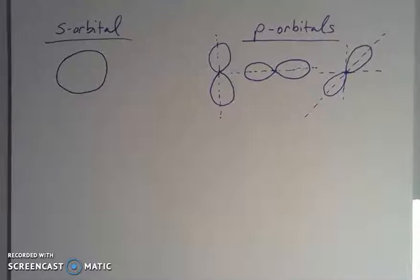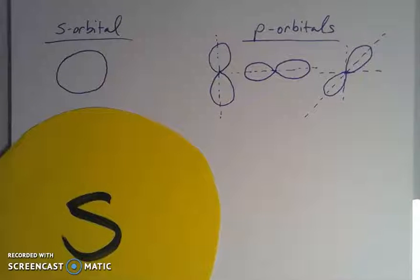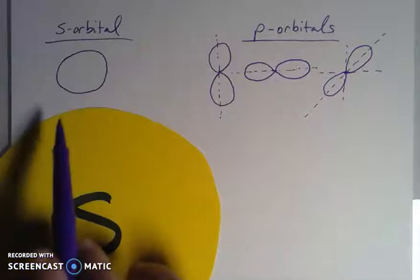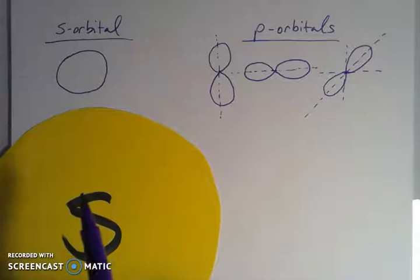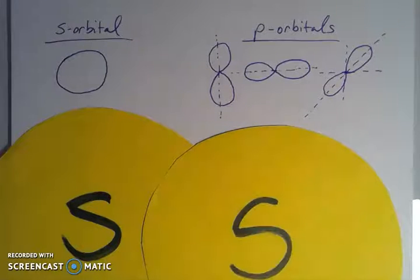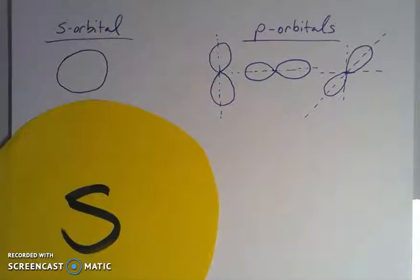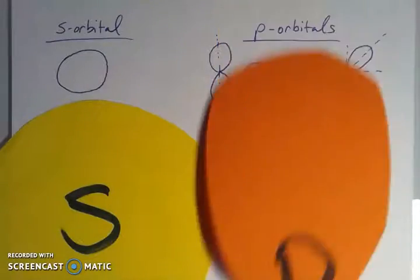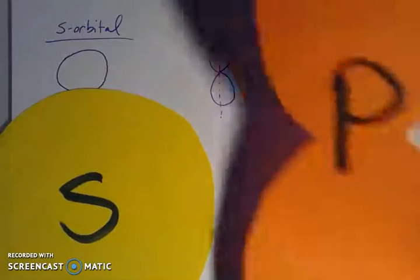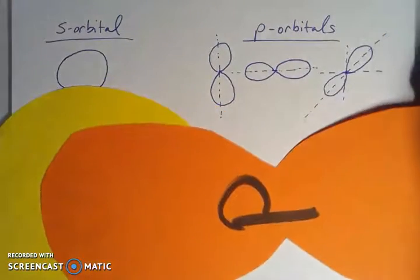Here's the s orbital — spherically shaped. Overlapping with another s orbital gives a really good overlap along the bond axis. If we want to overlap between an s and a p orbital, recall that p orbitals have two lobes, with three different orientations: py along the y-axis, px along the x-axis, and pz coming in and out of the plane — three different ml values, so three orientations.